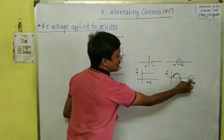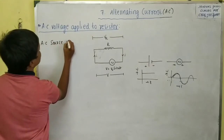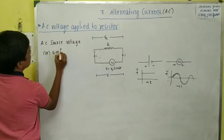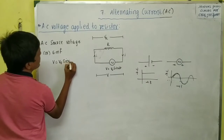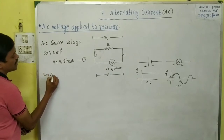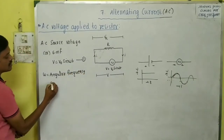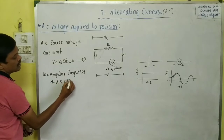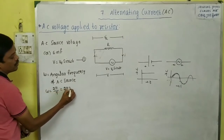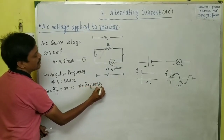Let us consider the AC source voltage varies sinusoidally. The AC source voltage or EMF is written as V = V₀ sin ωt. Here, ω is the angular frequency of the AC source. The formula for angular frequency is ω = 2π/T or 2πν, where ν is the frequency and T is the time period.